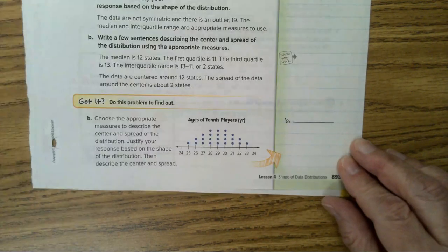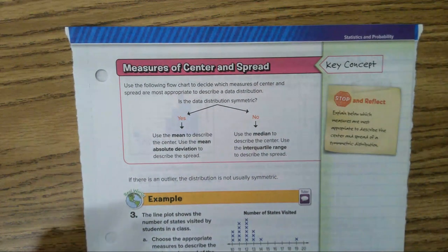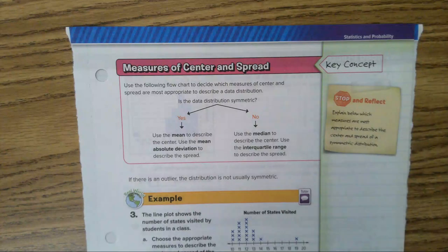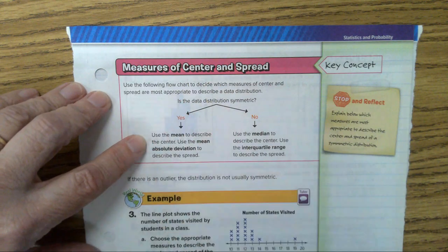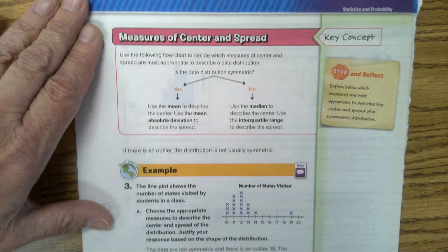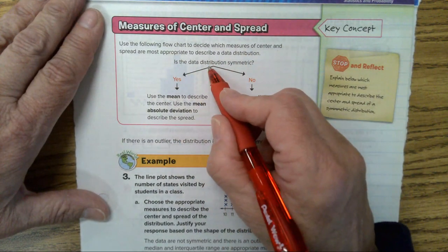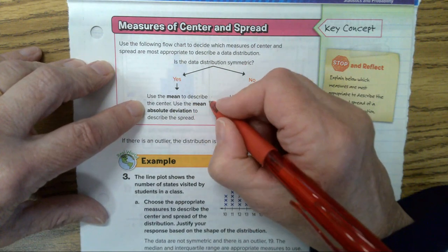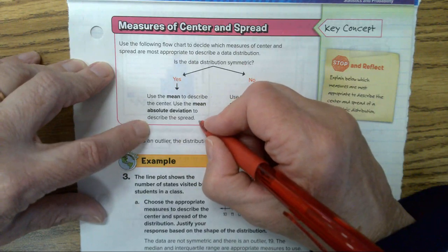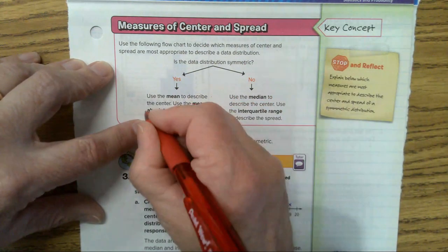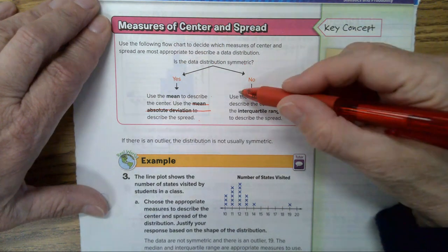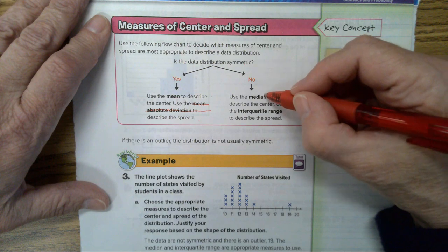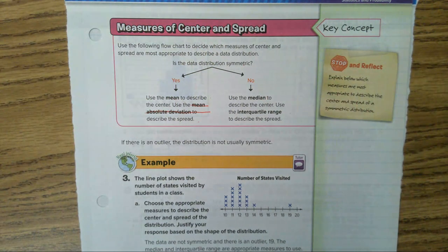Now let's go to page 893. Measures of center and spread. Well, the measures of center are mean, median, and mode, and the measures of spread are range and interquartile range. So use the following flow chart to decide which measure of center and spread are most appropriate to describe a data distribution. Here we go. When do you say it? Is the data distribution symmetric? Use the mean to describe the center. Use the mean absolute deviation to describe the spread. Kids, you're not going to need to know that information. You just need to know use the mean to describe the center. No. Use the median to describe the center. So when it's not symmetric, you use the median and you use the interquartile range to describe the spread.